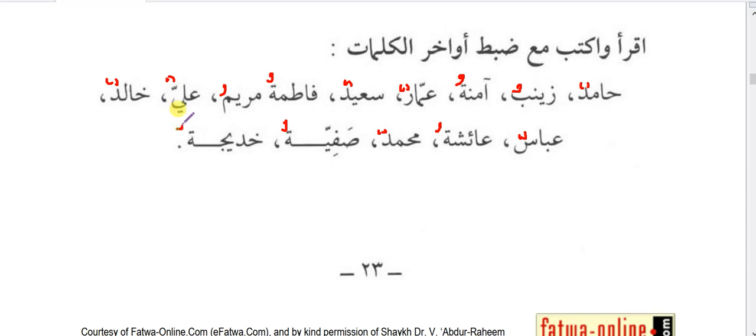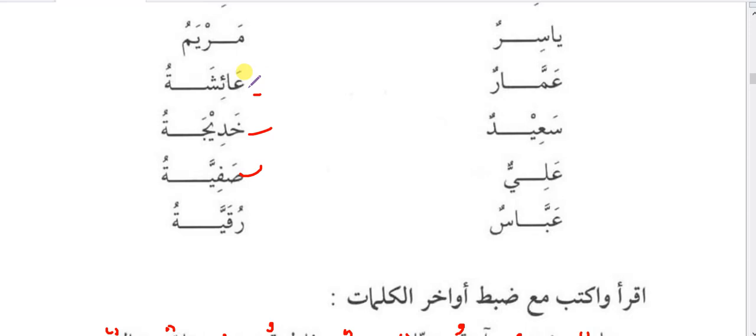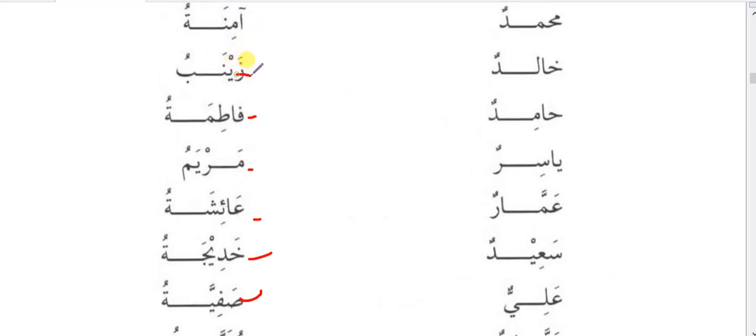Read and write with proper irab. Note: Zainabu — not Zainabun — because Zainab is ghair munsarif, it cannot accept tanwin or kasra. Same for Aminatu. Forms: Hamidun, Zainabu, Aminatu, Ammarun, Sayidun, Fatimatu, Mariamu, Aliun, Khalidun, Abbasun, Aishatun, Muhammadun, Safiyatu, Khadijatu.